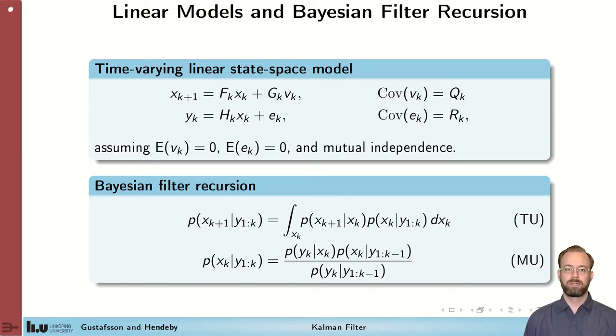We will show that a Kalman filter is a solution to the Bayesian filter recursion, and it will be an exact solution in case of Gaussian noise. For convenience, the Bayesian filtering recursion is given here. It consists of two parts.